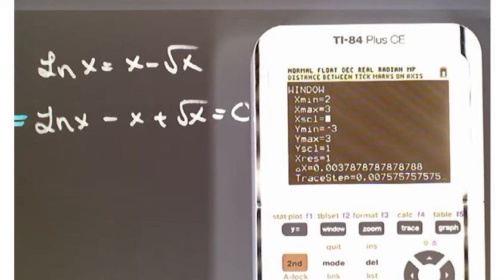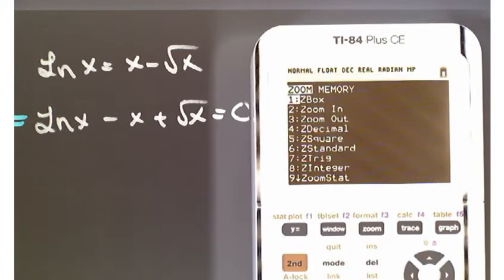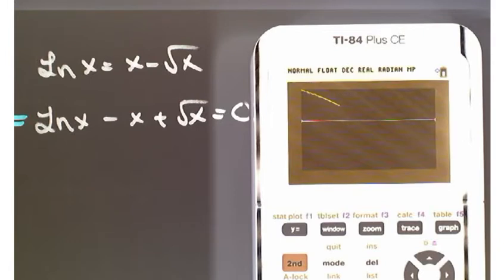I'll let my calculator do the rest of the work for me by typing in zoom and then zero. So zoom and then zero. That gives me a graph that crosses the x-axis.